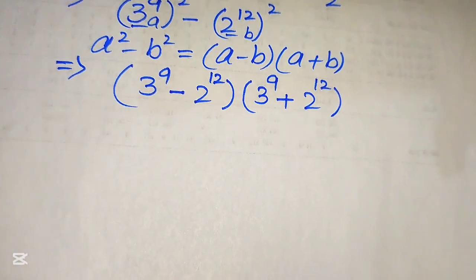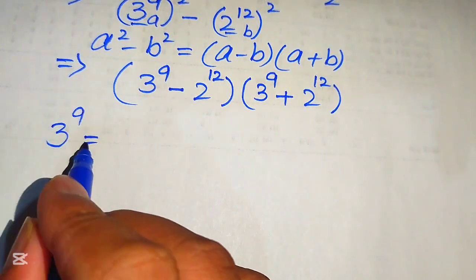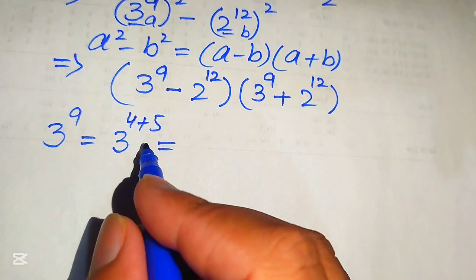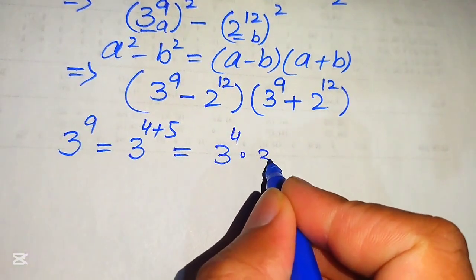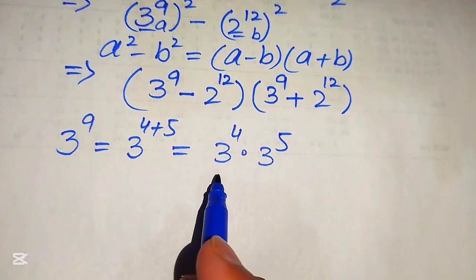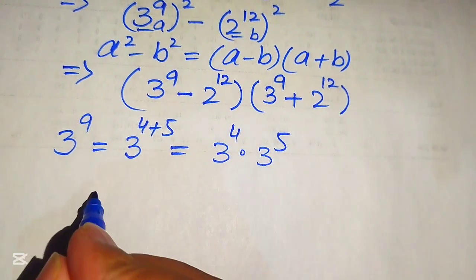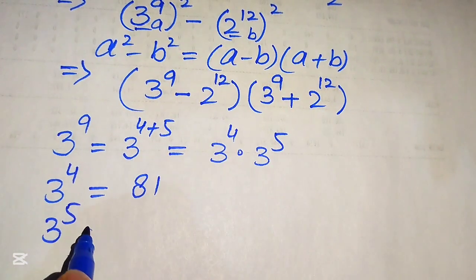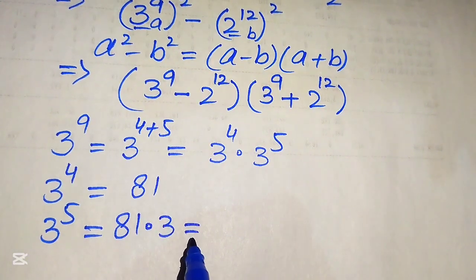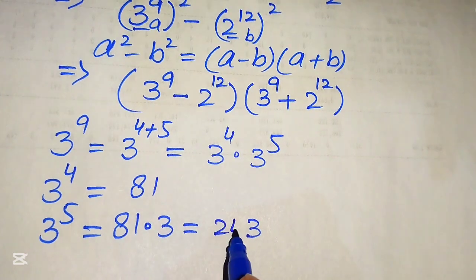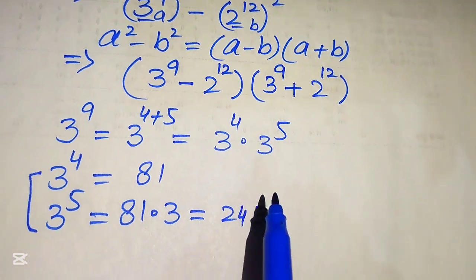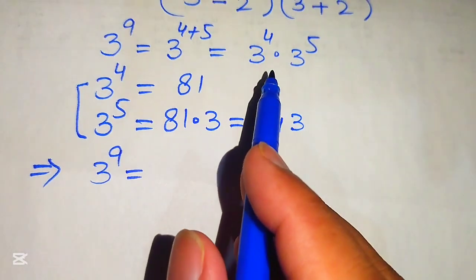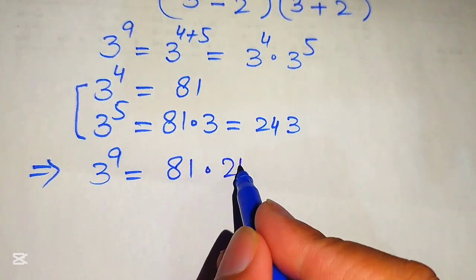To find 3 to the power of 9, we break the exponent as 3^4 times 3^5. We know that 3 to the power of 4 equals 81. To find 3 to the power of 5, we multiply 81 by 3: 3 ones are 3 and 3 eights are 24, giving 243. So 3^9 equals 81 times 243, where 3^4 equals 81 and 3^5 equals 243.